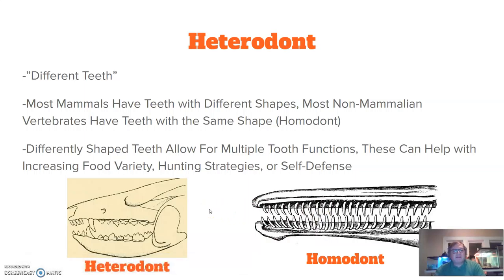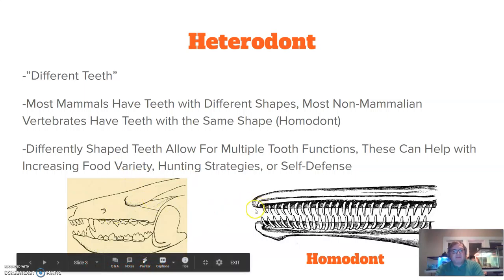Differently shaped teeth allow for multiple tooth functions. These can help with increasing food variety, hunting strategies, or self-defense. Even if we think about our own teeth, each of the different types serves a different function with how we eat food. This is an evolutionary advantage to have this variety in terms of teeth.